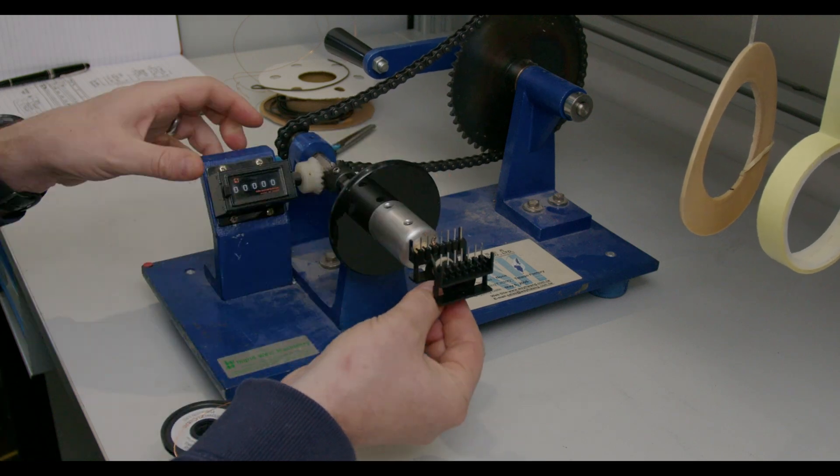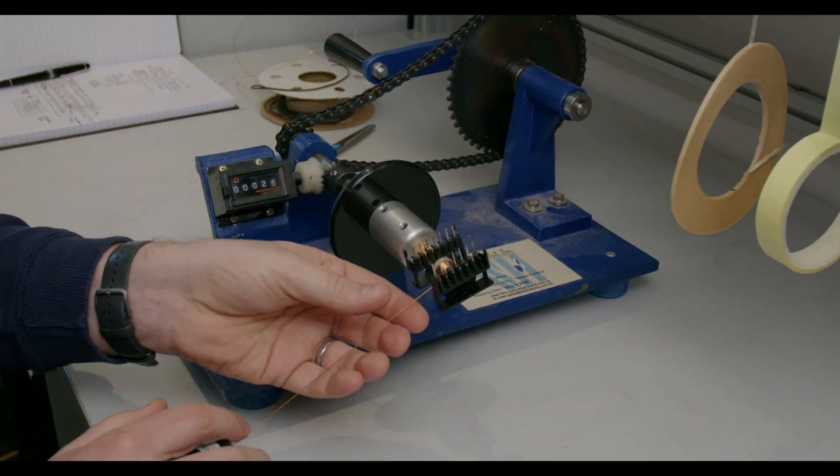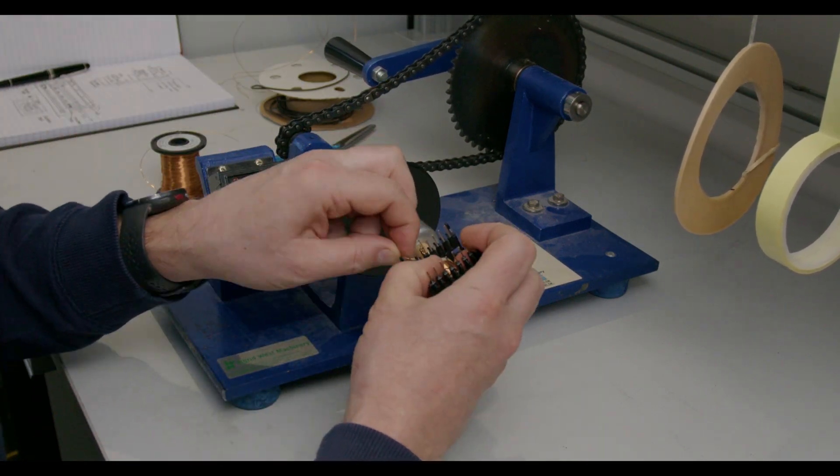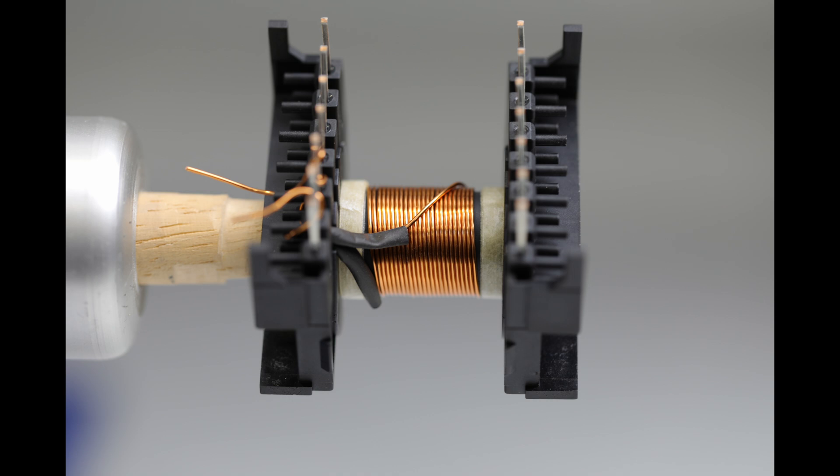Now we add the first 25 turns of 0.5 millimeter wire of the primary. We choose 25 turns here to fully fill a single layer and ensure a flat surface for the layers to be wound on top.